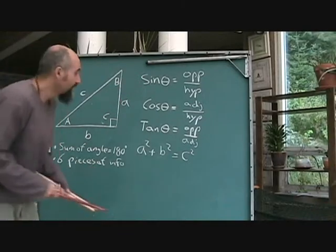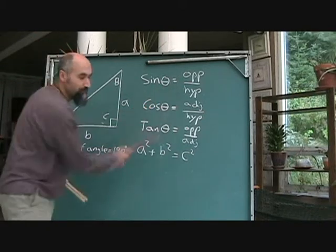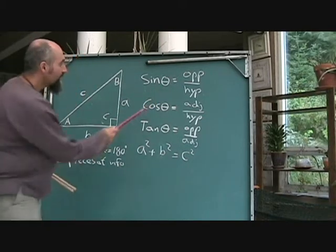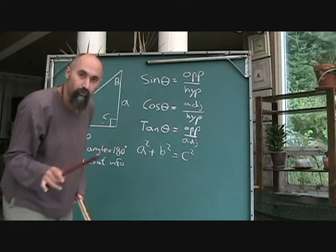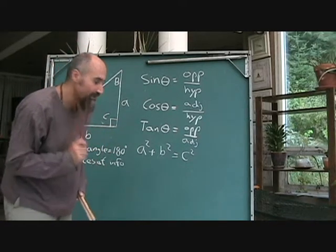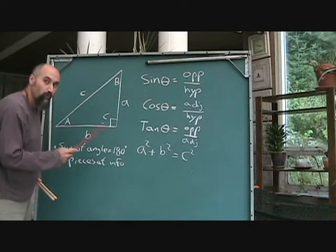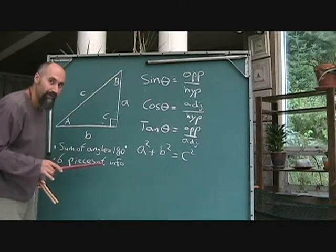Going back to the trig functions, when they say sine theta is opposite over hypotenuse, what you got to understand is theta is a neutral angle. So what you have to do is look at your drawing that you have and think about which angle you want to find out.